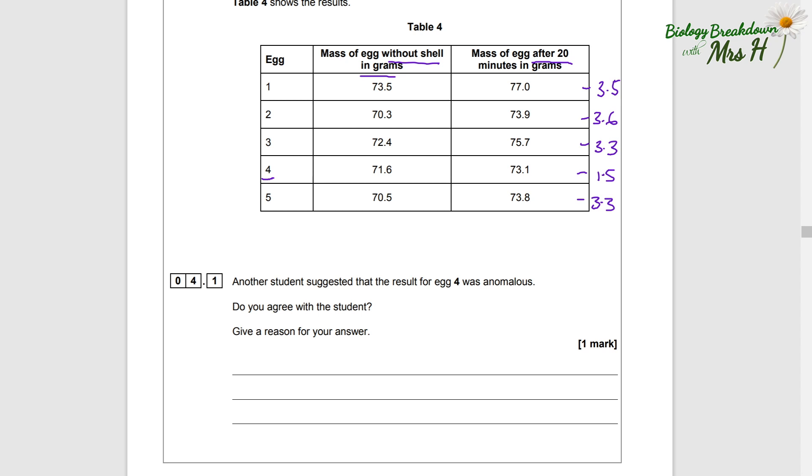Yeah, egg 4 does look anomalous. It's actually almost half of the other decreases. So our answer would be: yes, egg 4 result was anomalous because the mass change of egg 4 is much lower than the others.